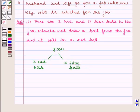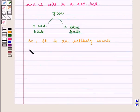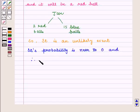The chances of drawing red balls are less. So it is an unlikely event. So its probability is near to 0 and therefore it matches P.